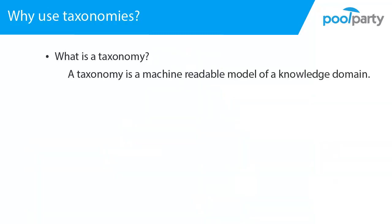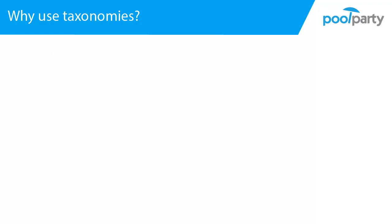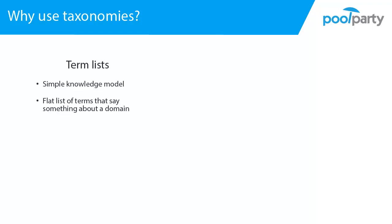Now we know that a taxonomy is a machine-readable model of a knowledge domain. We will take a look at why we would use taxonomies to model knowledge. Another very simple type of knowledge model often used in enterprises are term lists — a flat list of words or terms that have something to do with a domain. The limitation of flat term lists is that they say something about a domain, but it is not defined what exactly that something is, only that it has something to do with a domain.